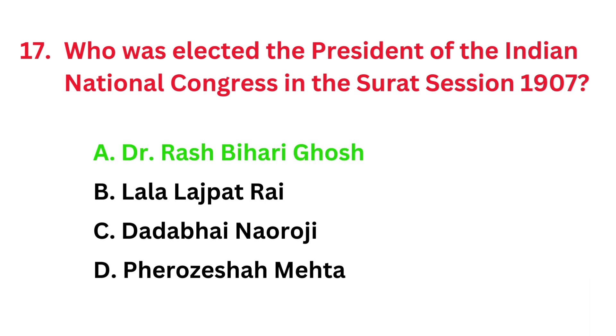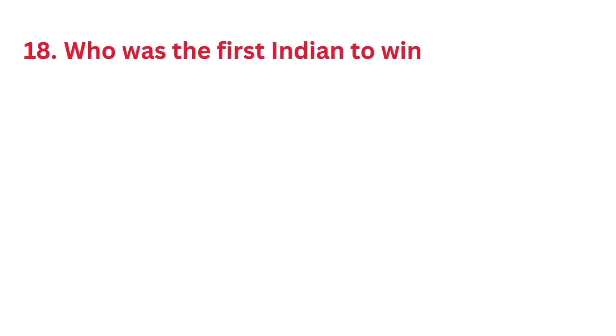Who was elected as the President of the Indian National Congress in the Surat session of 1907? The correct answer is option A: Dr. Ras Bihari Ghosh.